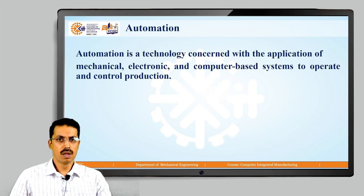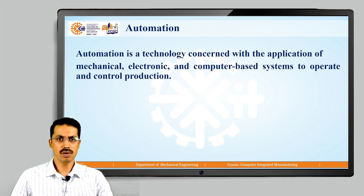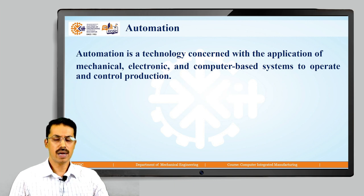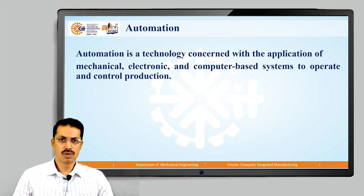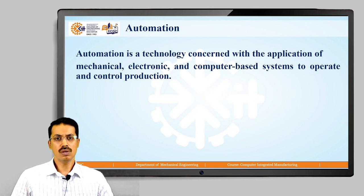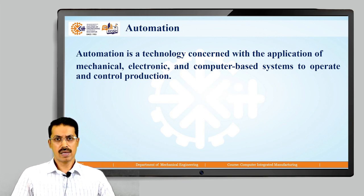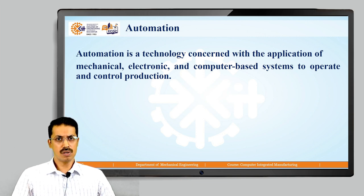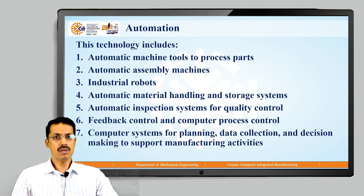What is automation? Automation is a technology concerned with the application of mechanical, electronic, and computer-based systems to operate and control production. Wherever we are taking help of mechanical, electronic, and computer-based systems for the manufacturing of a particular product, that concept is known as automation.